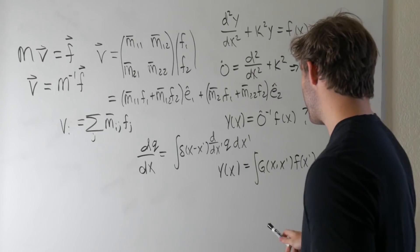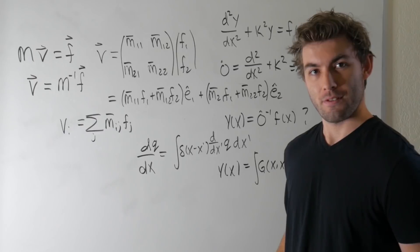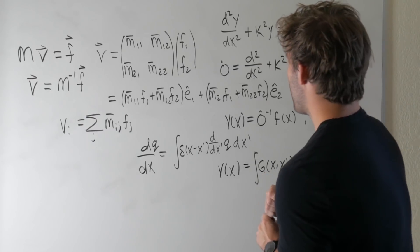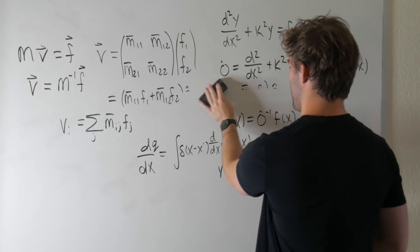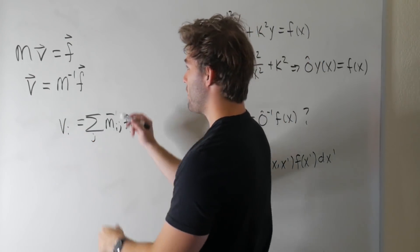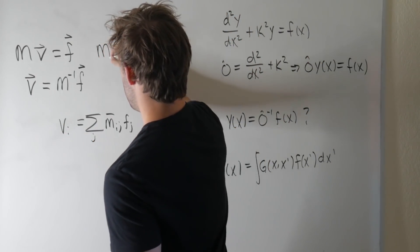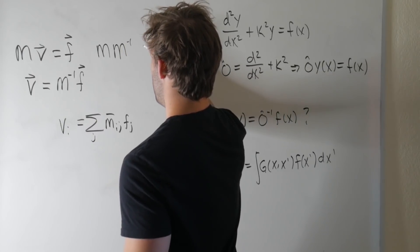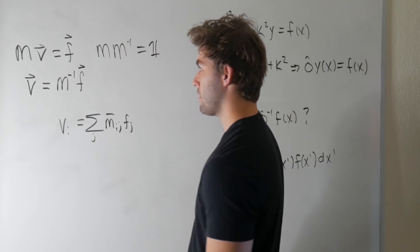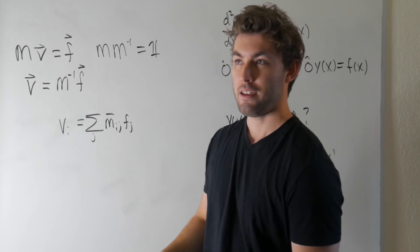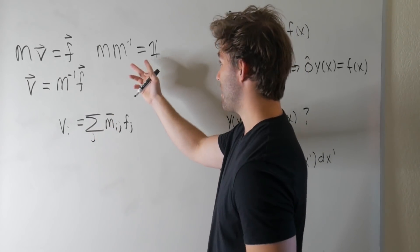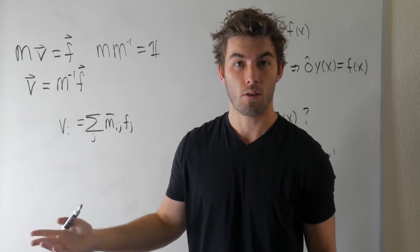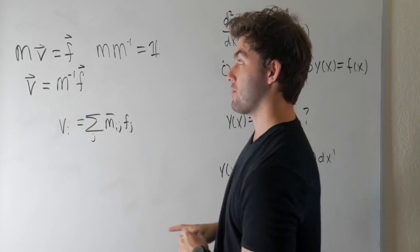But then the next question is, how do you find the Green's function? Well, in order to talk about that, let me erase this section here just to make myself some room. Let's think about what it means if you were to multiply M times M inverse. That should clearly give you the identity matrix, right, also known as the Kronecker delta. If the index of the row equals the index of the column, you should get a one, or else you should get a zero. Diagonals get ones, off-diagonals get zeros.